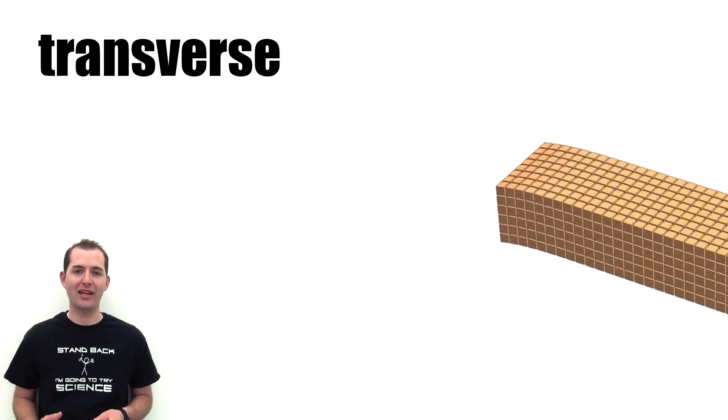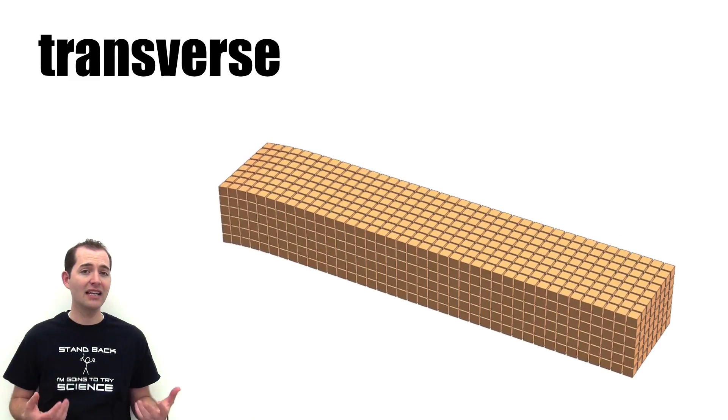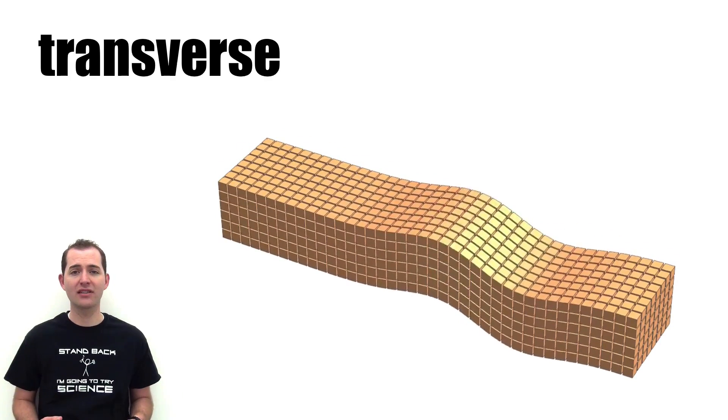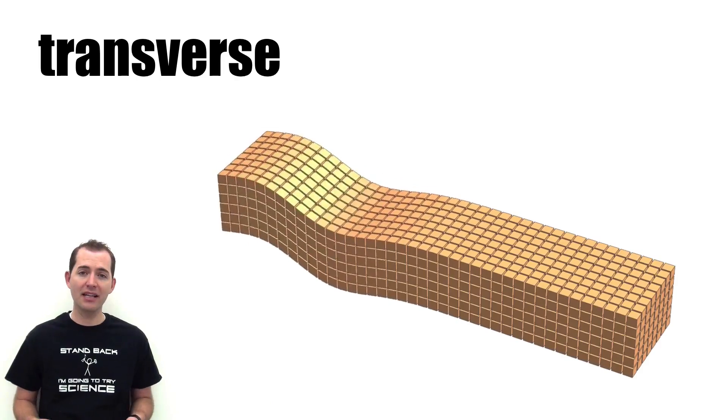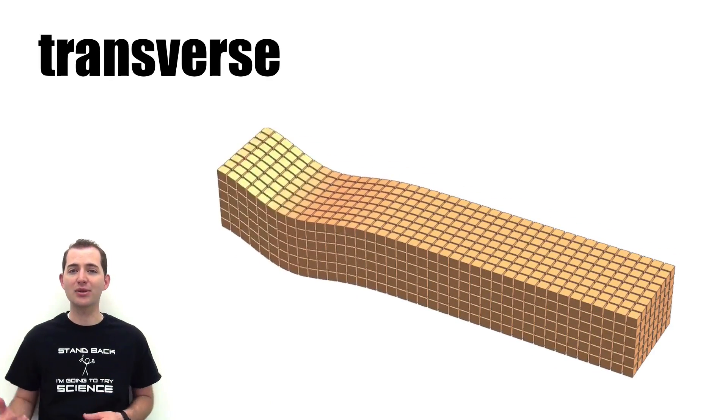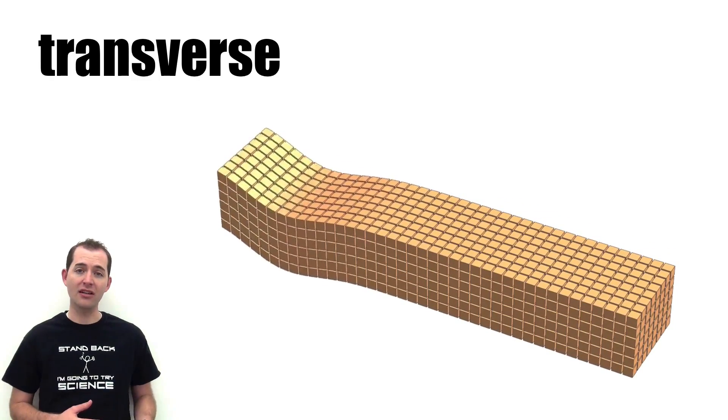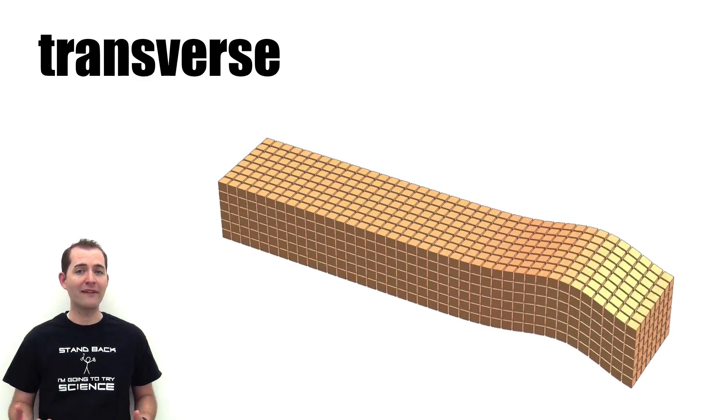For example, let's look at one type of wave from an earthquake. This is known as a S-wave or secondary wave and is a transverse wave. The individual pieces of the ground move up and down as the wave moves to the right. This is a transverse wave because the individual particles are moving perpendicular to the direction of the wave's propagation.